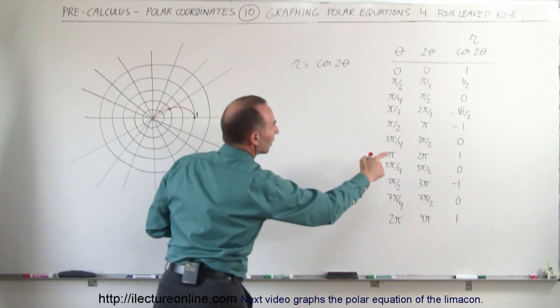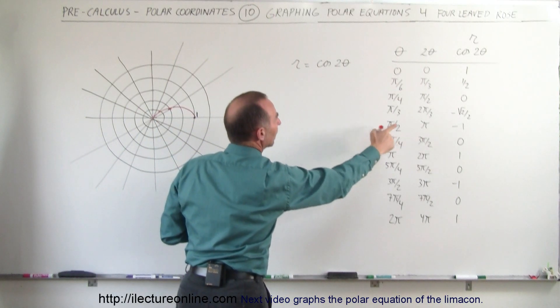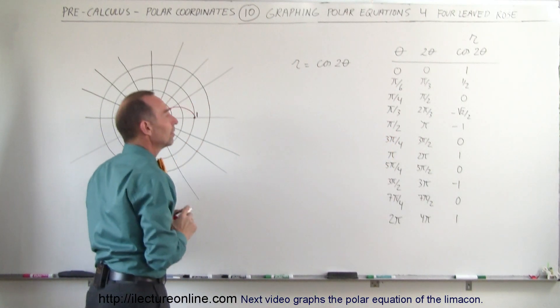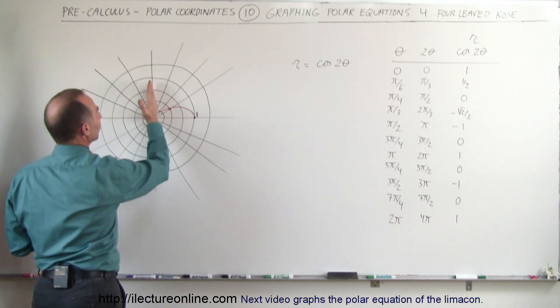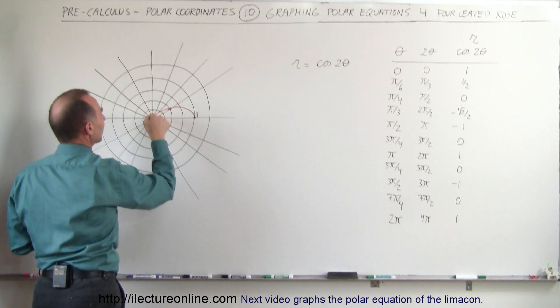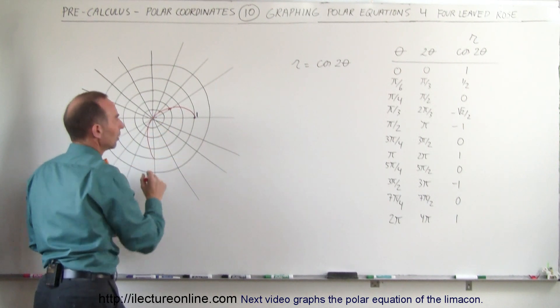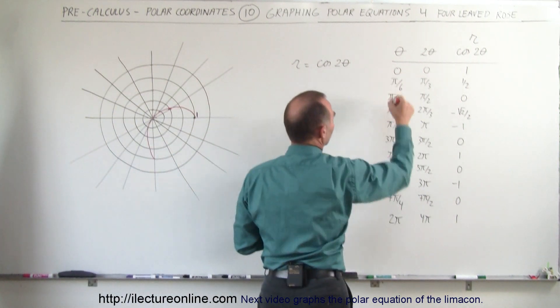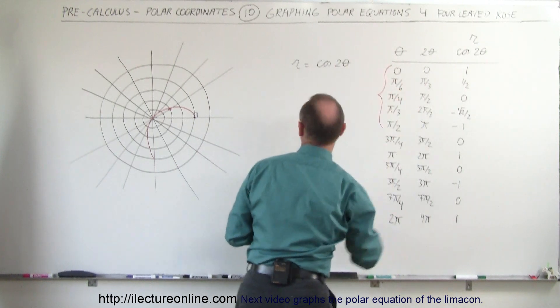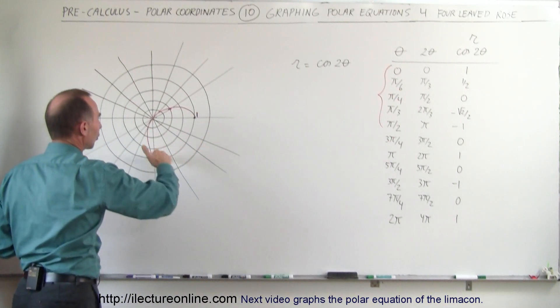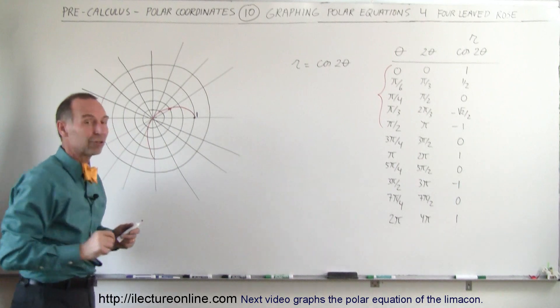Then at pi over 2, the distance is minus 1. So pi over 2 is in this direction. Minus 1 means I go down here all the way to this point right there. So now we've gone from there to there, and that is represented by the curve that we have so far in this location.